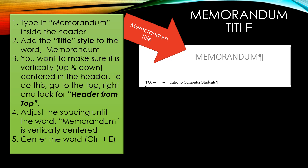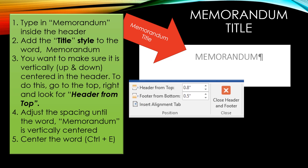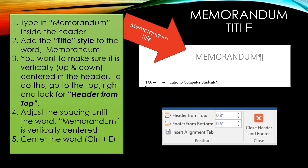You want to make sure the header is vertically centered up and down. To do this, go to the top right corner and look for 'header from top' and you can make an adjustment by clicking on the drop down arrows or the up arrows to get it centered. Once it looks like it's centered up and down, then you need to center the word horizontally — that would be left to right — by using the Control E shortcut.